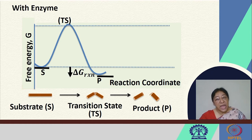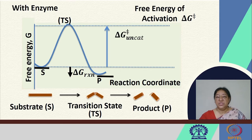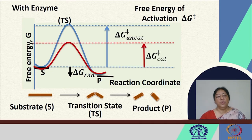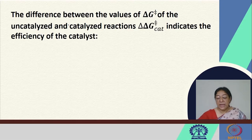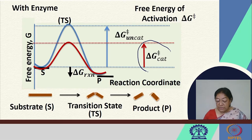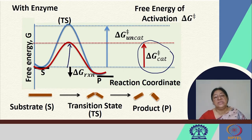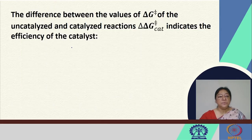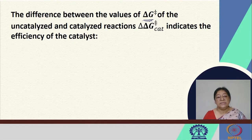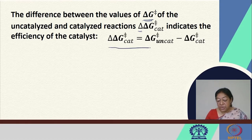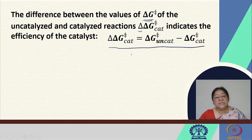For the same reaction with an enzyme, we would have the substrate, the product, and the transition state, but the delta G reaction would be the same. The free energy of activation for the catalyzed reaction, delta G cat, is lower than that of the uncatalyzed reaction, indicating that we have facilitated the formation of the product. The difference between the free energies of activation of the uncatalyzed and catalyzed reactions gives us a delta-delta G cat, which is a measure of how efficient the catalyst is.